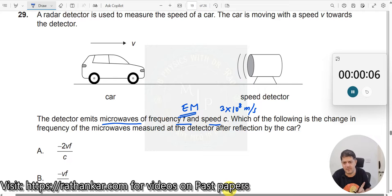Whenever you are using electromagnetic waves, what formula should you use? You should use delta f by f equals v by c. This is what you should use.